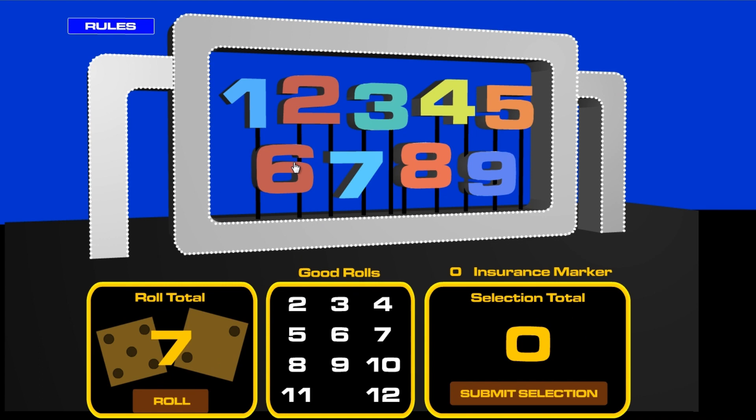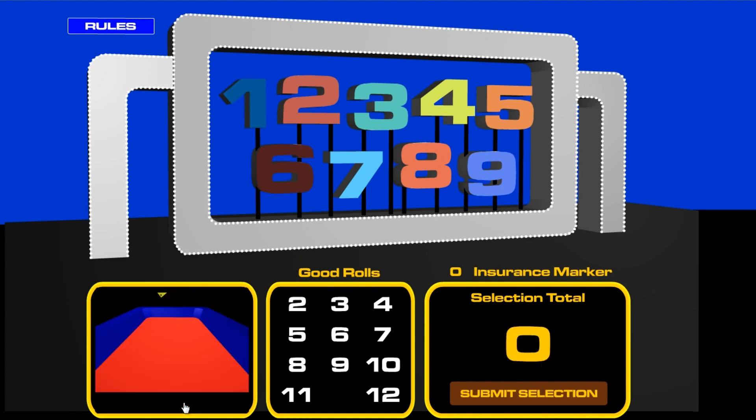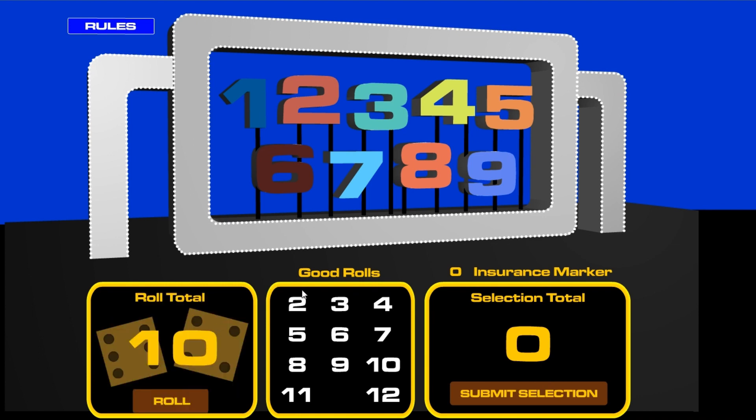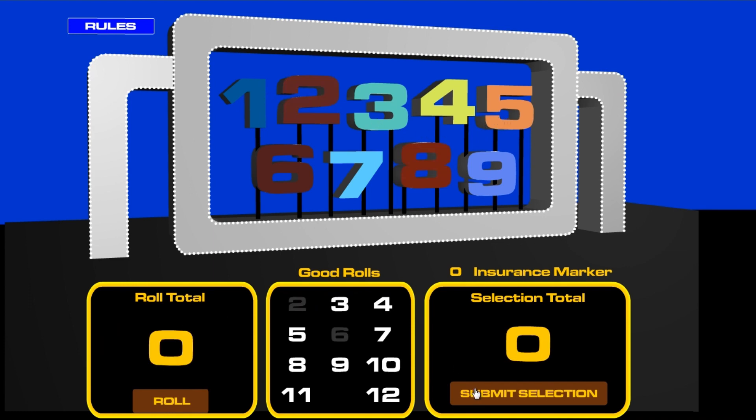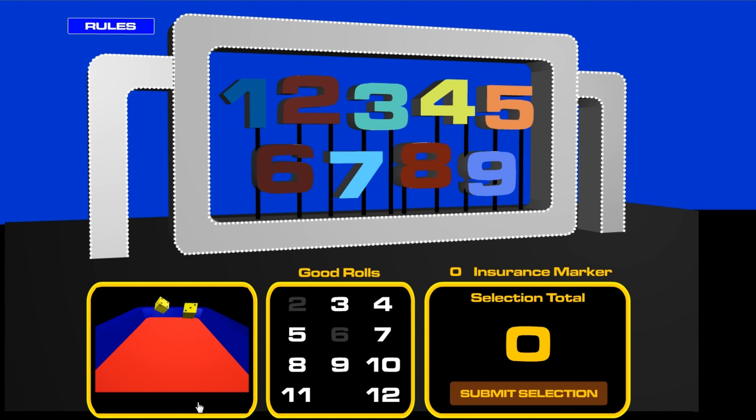We start with a seven and we'll take off the six and the one. There they go. Next roll is a ten and we are going to do the eight and the two. Take those off the board.